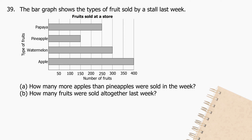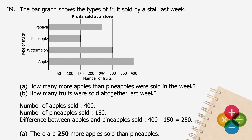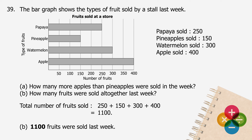Question 39: The bar graph shows the types of fruit sold by a stall last week. A. How many more apples than pineapples were sold? The number of apples sold is 400 and pineapples is 150. The difference is 400 minus 150 equals 250. There are 250 more apples sold than pineapples. B. How many fruits were sold altogether? The number of papaya sold is 250 and watermelon is 300. The total is 250 plus 150 plus 300 plus 400 equals 1,100 fruits sold last week.